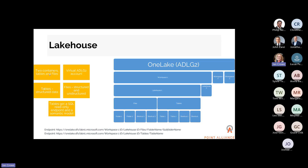There are separate containers for tables and files. Files could be things like CSV or Excel spreadsheets, or shortcuts to files stored elsewhere. Tables are structured data of rows and columns, and files could be structured or unstructured — for example, Word documents as well, but most of the time it's CSVs and Excel.